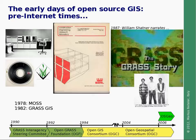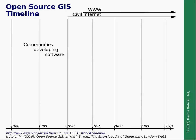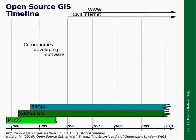If we look at the timeline, we start in the early 80s with two or three systems: MOS, GRASS GIS, and the Projection 4 library for reprojection, which is used in different software projects even today. Two of those survived and are continuously developed, and then with the advent of civil internet, things changed quite a bit.